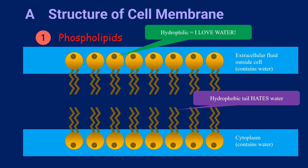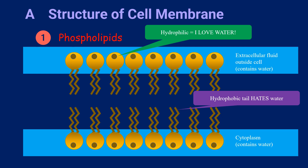So, if we have a look at the structure of the cell membrane, the hydrophilic head points outward, pointing to the extracellular fluid containing water, and also the cytoplasm containing water. Proteins are also present in the cell membrane and they have different functions. Channel proteins and carrier proteins have functions related to the transport mechanisms we will discuss later. Receptors bind to chemical messages outside the cells to turn on certain activities. Antigens are glycoproteins used to recognize the cells. Enzymes speed up chemical reactions — in fact, we have a complete video talking about how enzymes can speed up chemical reactions.